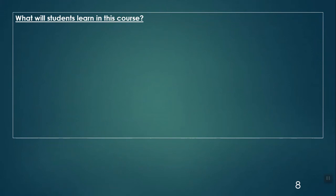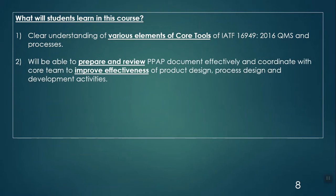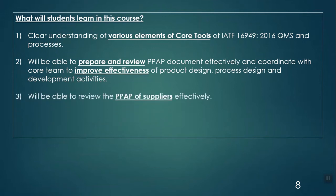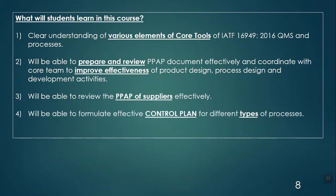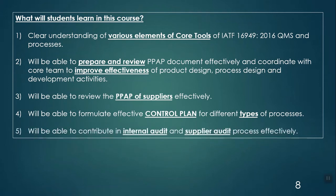What will students learn in this course? A clear understanding of various elements of the core tools of IATF 16949:2016 Quality Management System and processes. Participants will be able to prepare and review PPAP documents very effectively and coordinate with core teams to improve effectiveness of product design, process design, and development activities. They will also be able to review supplier PPAPs effectively, formulate effective and realistic control plans for different types of processes, and contribute effectively in internal audits and supplier audit processes.